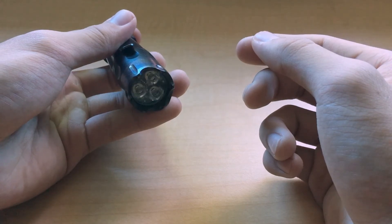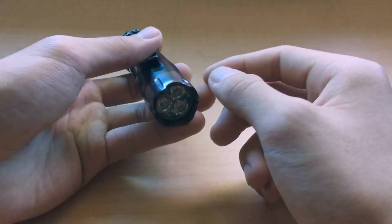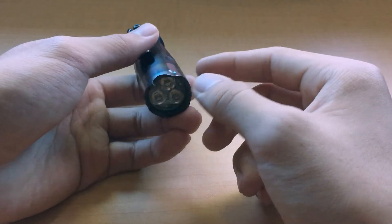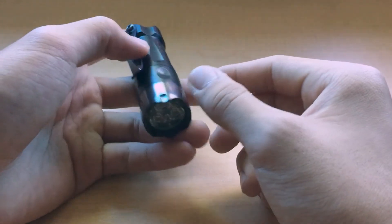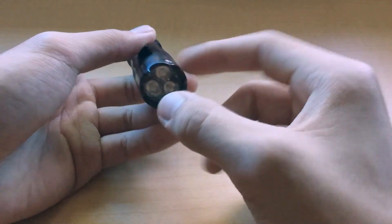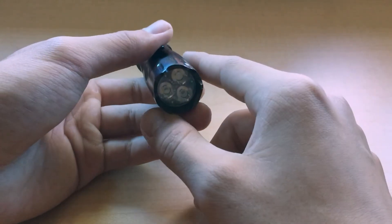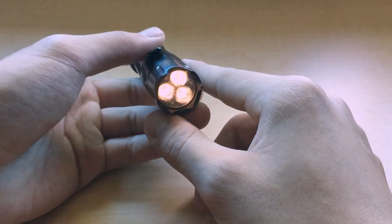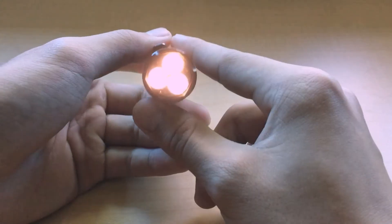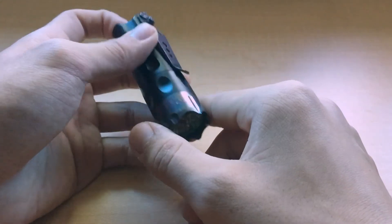How this works is basically you access the voltage meter through a sequence of button presses. One, two, three, four. So yeah, we're currently at four volts in this flashlight. That's about 90% capacity for an 18350 I believe.